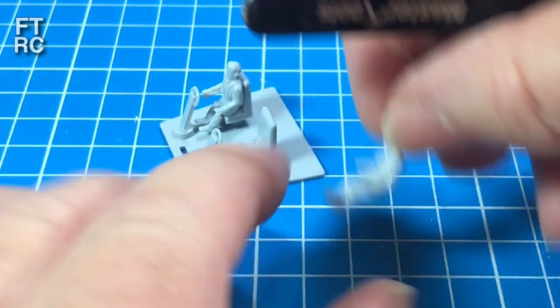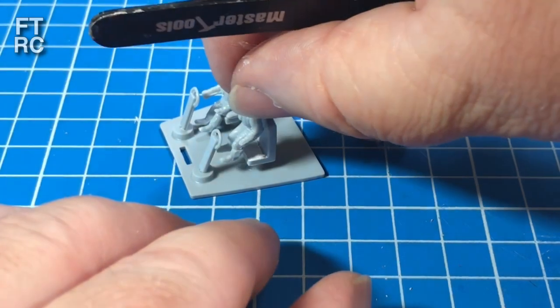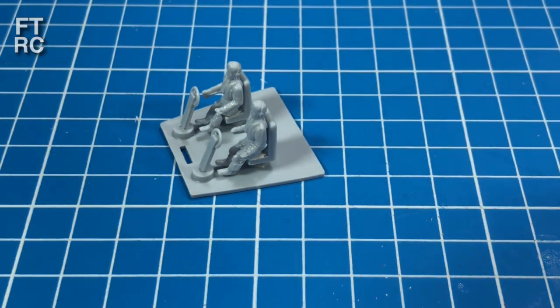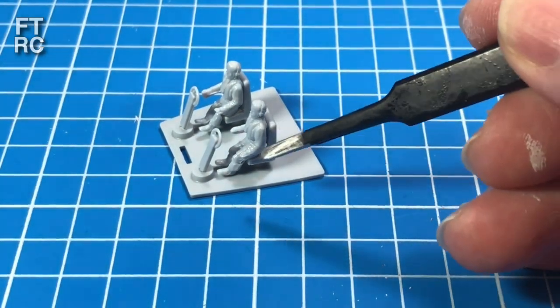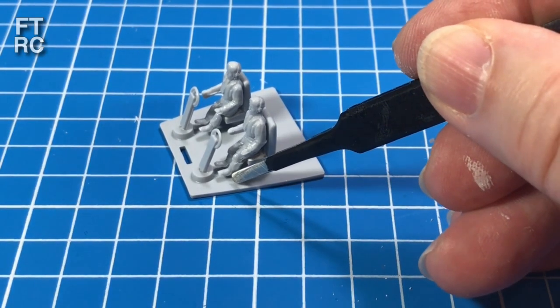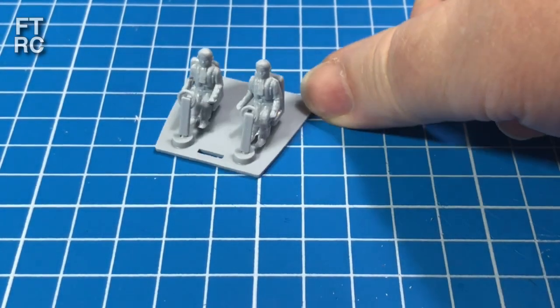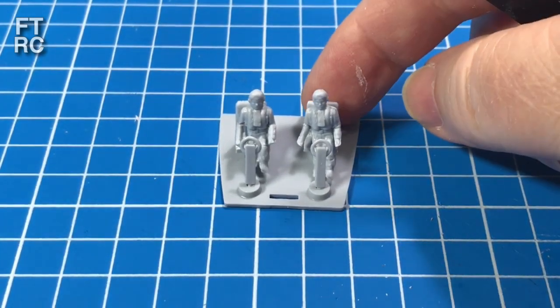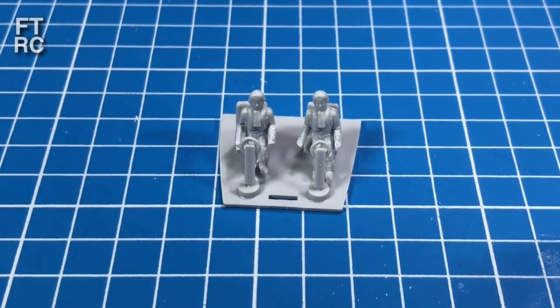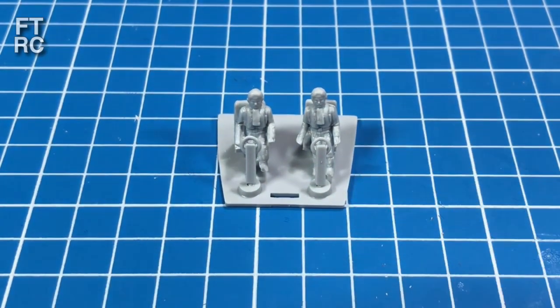And here we go. Here's our shortened pilots. In they go. I've got the tweezers, but actually it's just as easy to put them in by hand. And now you'll see their shoulders are only as high as the seat backs. So they sit there fine. They look great, much better than they were before.